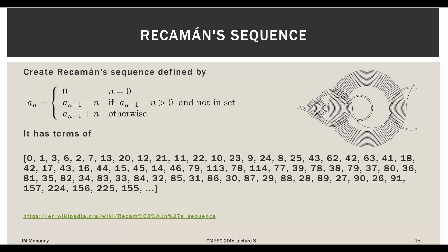Then we increase little n to one. If we want to know a sub one, we have to look at the rules. The next term in the sequence is determined by the previous term minus n, as long as that term is positive and not already in our set. Otherwise, it's going to be the previous term plus n.